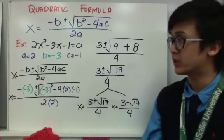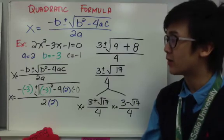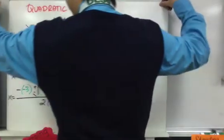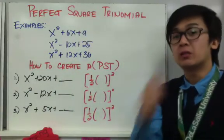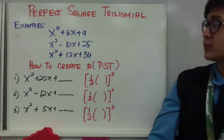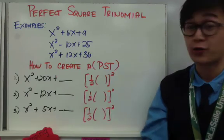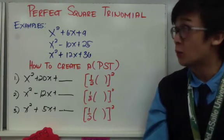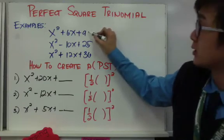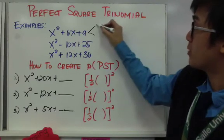Now for our third method — completing the square. Prior to using this method, you need to understand the special process involved, which is producing a perfect square trinomial. An example of perfect square trinomials: x squared plus 6x plus 9, x squared minus 10x plus 25, and x squared plus 12x plus 36. These are called perfect square trinomials because when factored, each produces two identical factors.